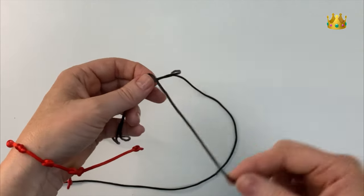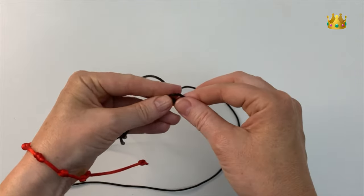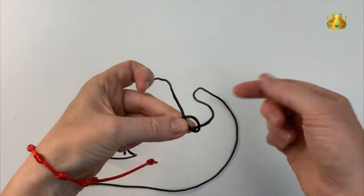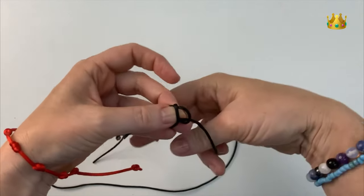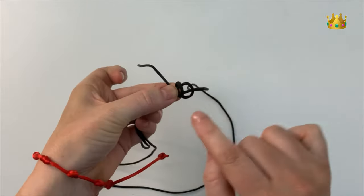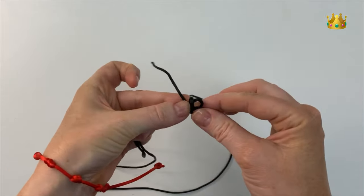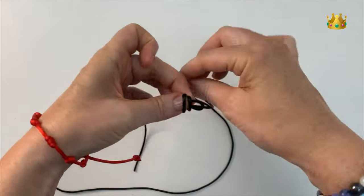Then we bring this cord over the front, down and out the back to form our first loop here. Now again bringing this cord over the front, down and out the back to form our second loop. And then again for a third loop as well. Over the front, down and out the back.